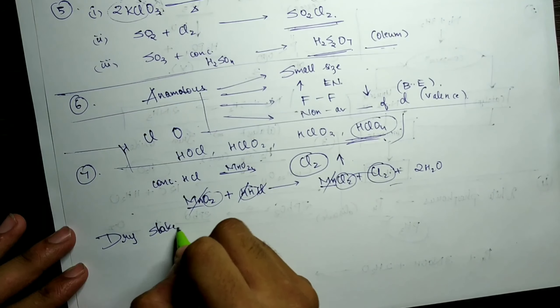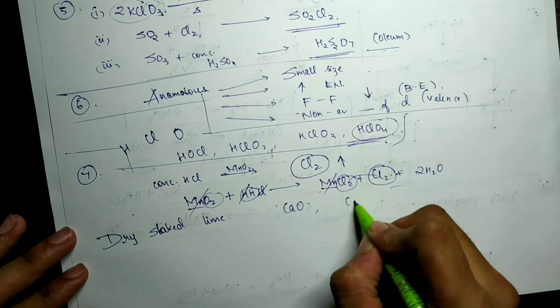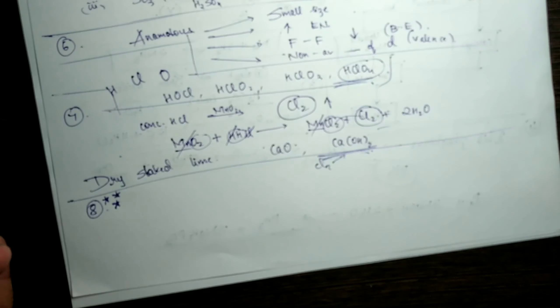Question 6, Part 2: Give an example of one oxo acid of chlorine. An oxo acid must contain chlorine, oxygen, and hydrogen (since it's an acid). Examples include HClO (hypochlorous acid), HClO₂ (chlorous acid), HClO₃ (chloric acid), or HClO₄ (perchloric acid). Note that HClO₄ is the strongest acid in the world — just write any one of these if asked.